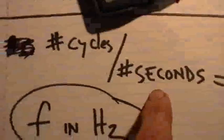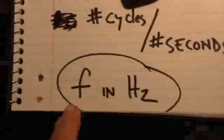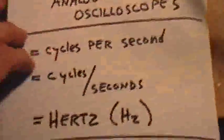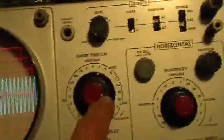So you count the number of cycles and you divide it by the number of seconds, and that gives you the frequency in Hertz. But first you have to have your horizontal time base set to some known standard.